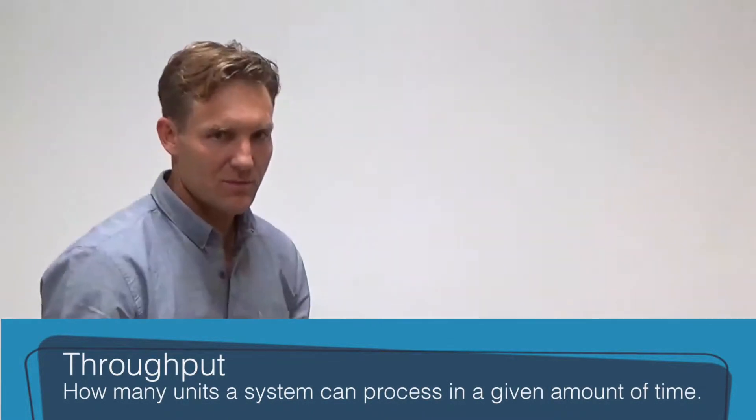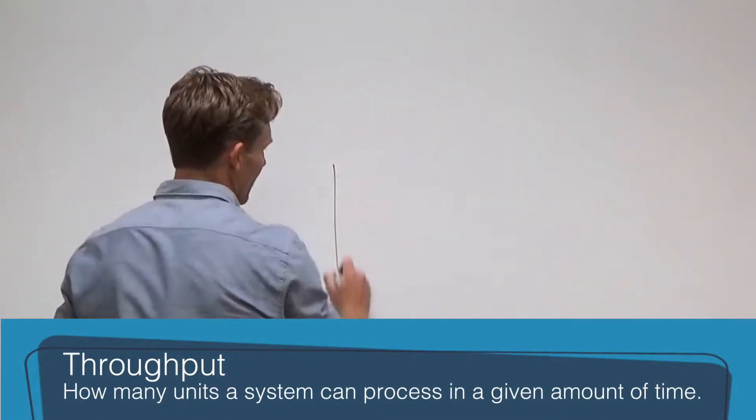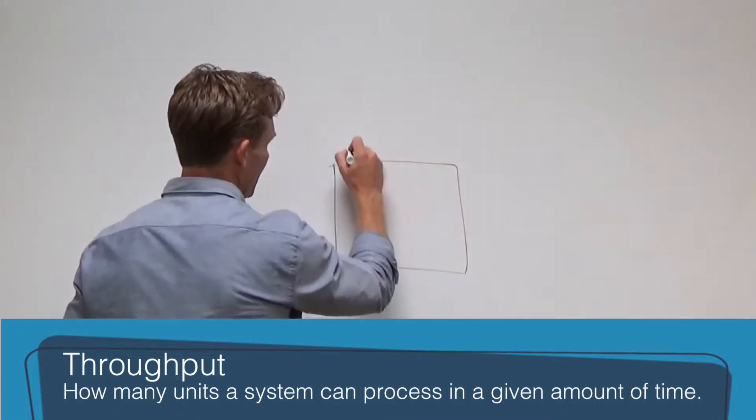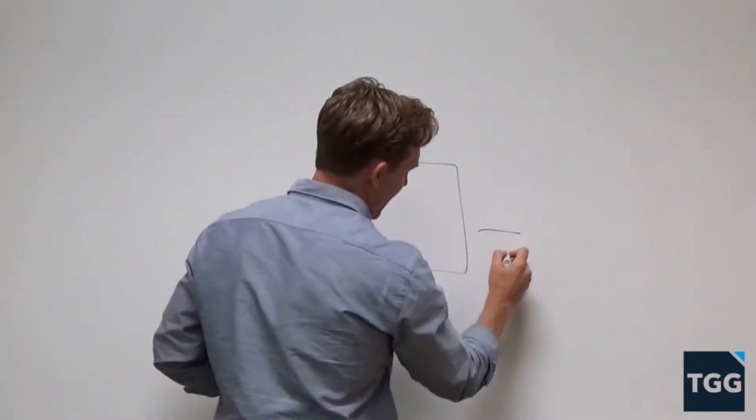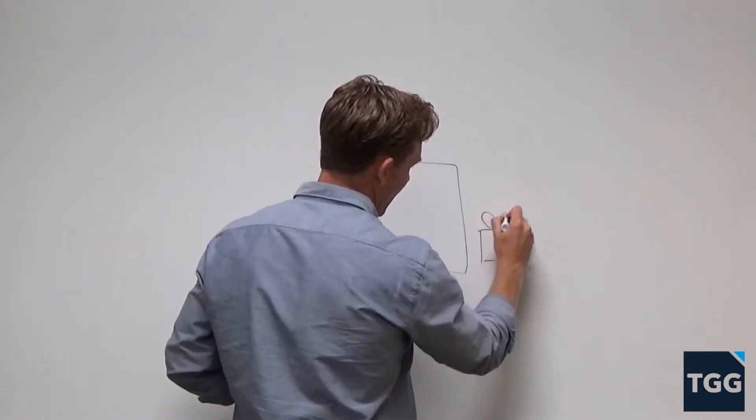One of the best ways to improve gross margin is by increasing throughput or increasing utilization. We're going to talk about it in terms of the manufacturing sector. This is our manufacturing building with smokestacks, and we're going to put stuff in here and have it come out as a finished good with a bow on it.